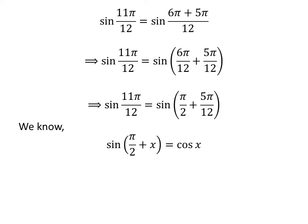We know the trigonometry identity: sine of pi upon 2 plus x is equal to cosine of x. The proof of this trigonometry identity is explained in the video appearing in the upper right corner of this video. The link of the video is also given in the description section. Application of the above identity gives us sine of 11 times pi upon 12 is equal to cosine of 5 times pi upon 12.